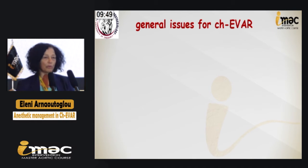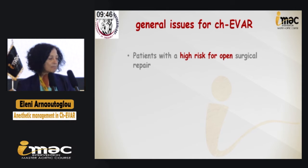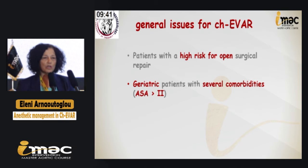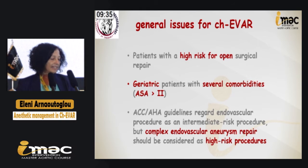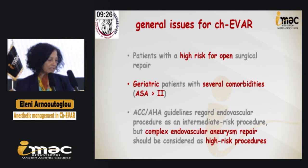I would clarify from the beginning that these patients are patients with high risk for open surgical repair. They are usually geriatric patients with several comorbidities, and they usually have ASA 3 and more. They undergo a complex endovascular aneurysm repair that should be considered a high-risk procedure according to the American College of Cardiology and American Heart Association guidelines.